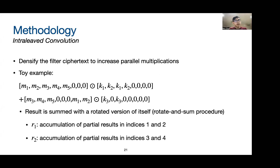In the previous implementation, the filter ciphertext is quite sparse, so what we can do is densify the ciphertext to increase parallel multiplications. We call this interleaved convolution. In the toy example, we can encode K1 and K2 within the same ciphertext. The result is then summed with a rotated version of itself — this is called a rotate-and-sum procedure. R1 is an accumulation of the partial results in indices 1 and 2, and R2 is an accumulation of the partial results in indices 3 and 4.